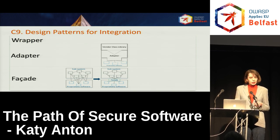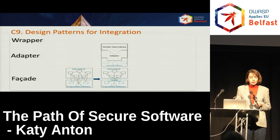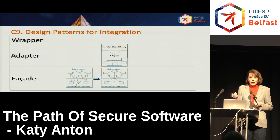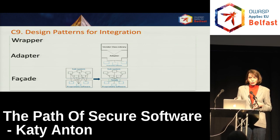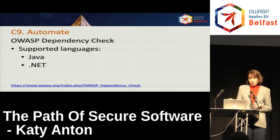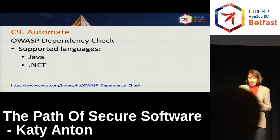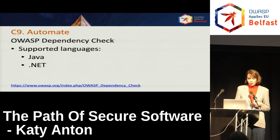For Java applications in particular — large ones — the number of third-party libraries can be large, from tens to hundreds. Managing those manually is impossible, so you need to automate it. You can use the OWASP Dependency Check tool, which currently supports .NET and Java languages.